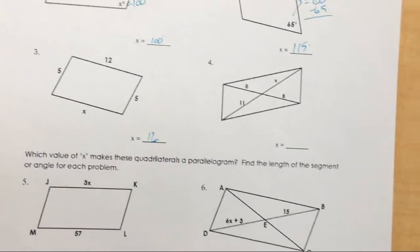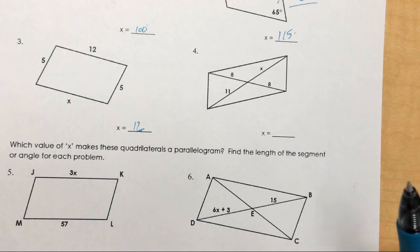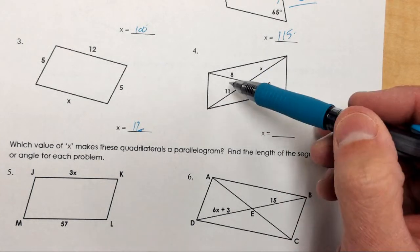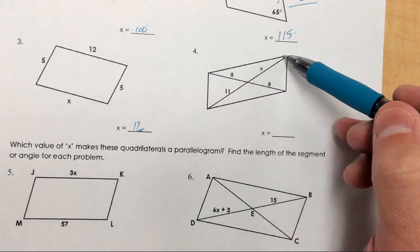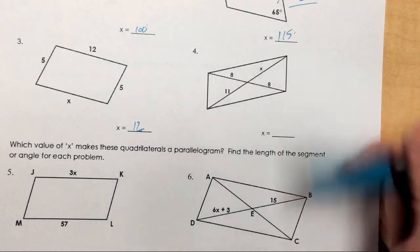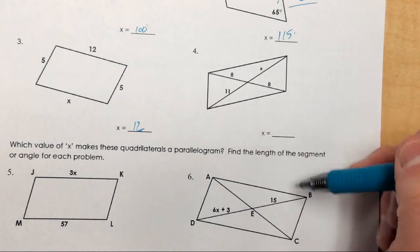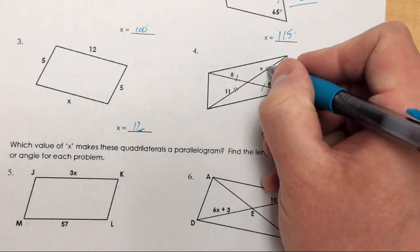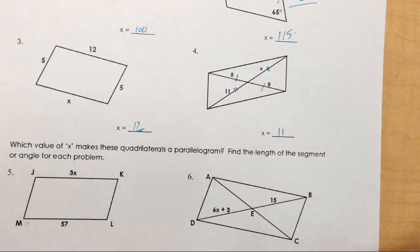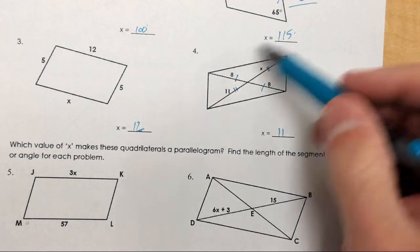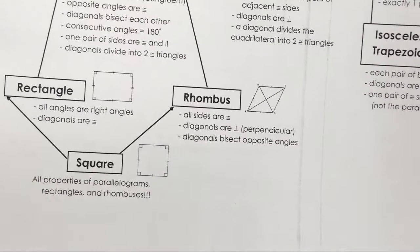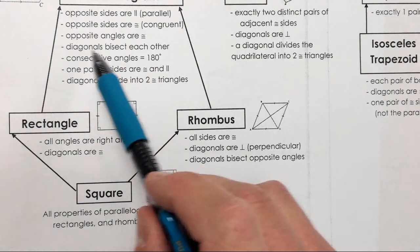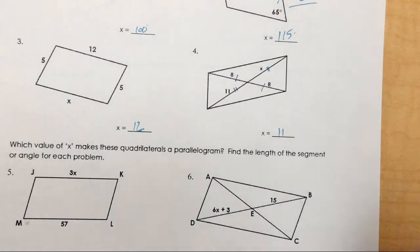Number four is focusing on diagonals. A diagonal is a line that cuts through a shape from corner to corner. This diagonal cuts the other in half — notice these are congruent to each other, 8 and 8 — so the other segments would also be congruent, making x equal to 11. Since this is focusing on diagonals, we look at the quadrilateral flowchart, and the specific property here is that diagonals bisect each other.